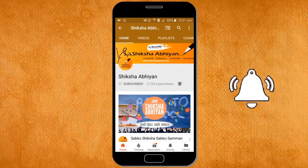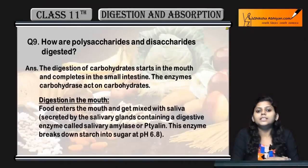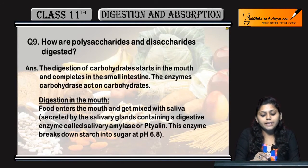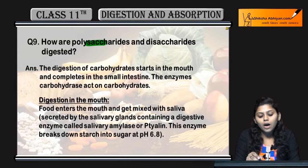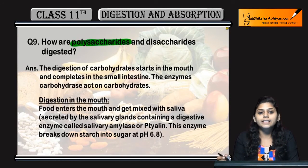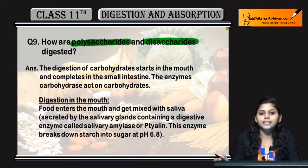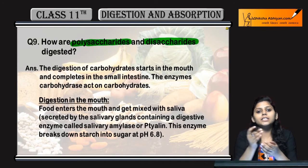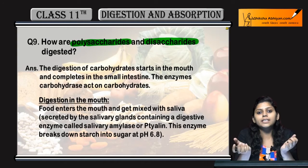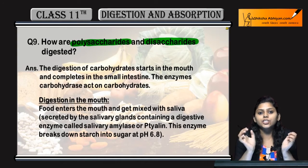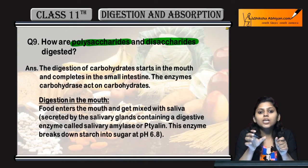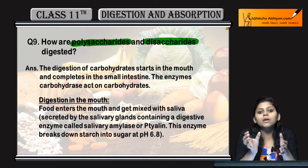Question number nine: How are polysaccharides and disaccharides digested? These are saccharides — sugar units. So we are discussing the digestion of sugars, which means digestion of carbohydrates.